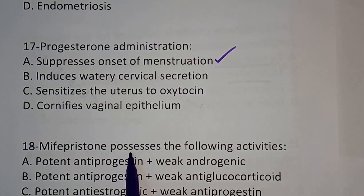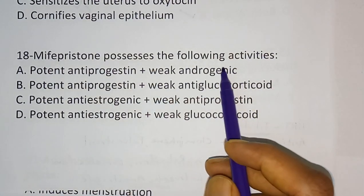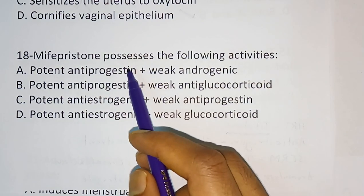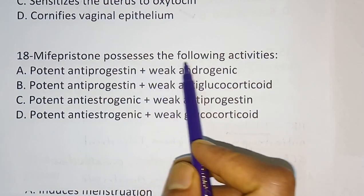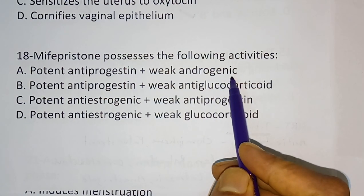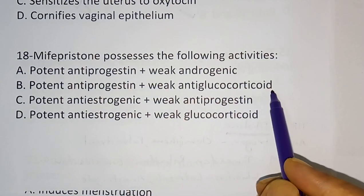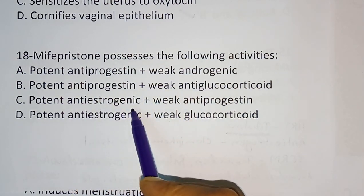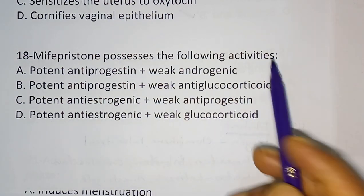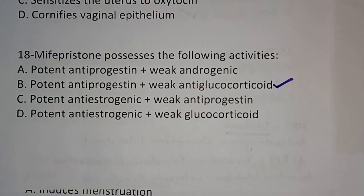Question number 18: Mifepristone possesses the following activity. Mifepristone is actually an anti-progesterone drug. Options: A) Potent anti-progesterone and weak androgenic. B) Potent anti-progesterone and weak anti-glucocorticoid. C) Potent anti-estrogenic and weak anti-progesterone. D) Potent anti-estrogenic and weak glucocorticoid. The correct answer is option B — potent anti-progesterone and weak anti-glucocorticoid.